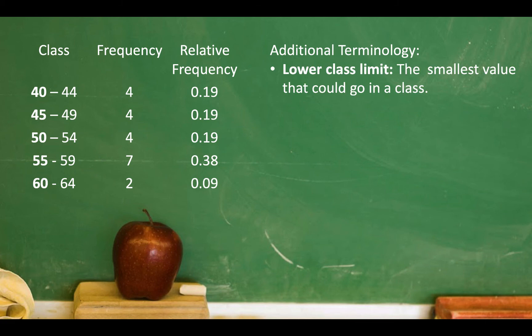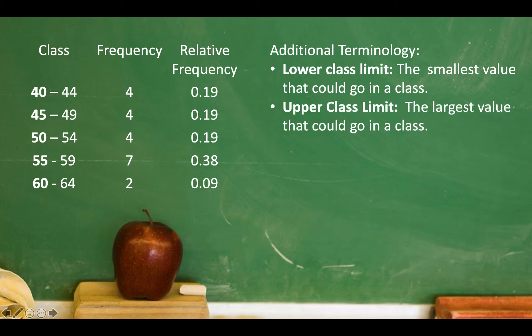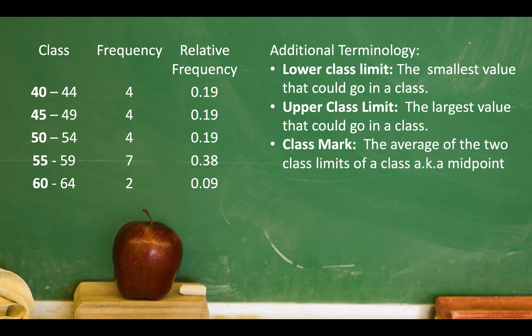Some additional notes: the lower class limit for the first bin is 40, and the upper class limit is the largest value that goes into the class, which is 44. For the class 55 to 59, the lower class limit is 55 and the upper class limit is 59. The class mark, also known as the midpoint, for the first class is 42; for 45 to 49 it is 47; then 52, 57, and so forth.